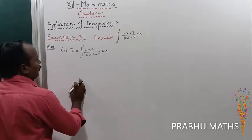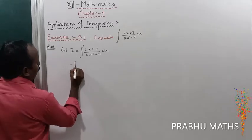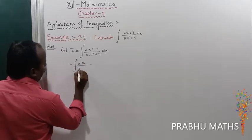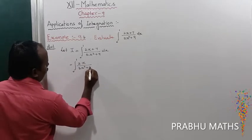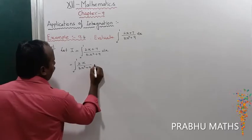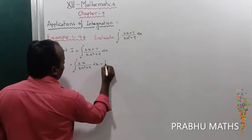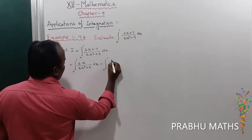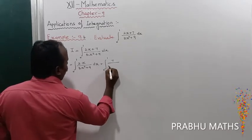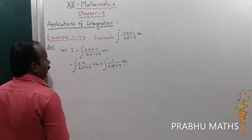The first step is to split the numerator into two parts: ∫₀¹ (2x)/(5x² + 9) dx plus ∫₀¹ 7/(5x² + 9) dx.